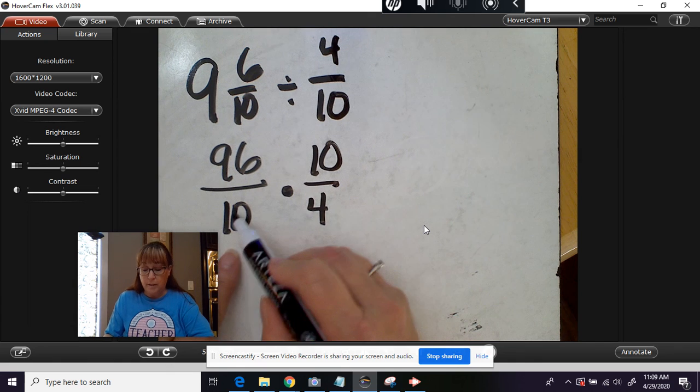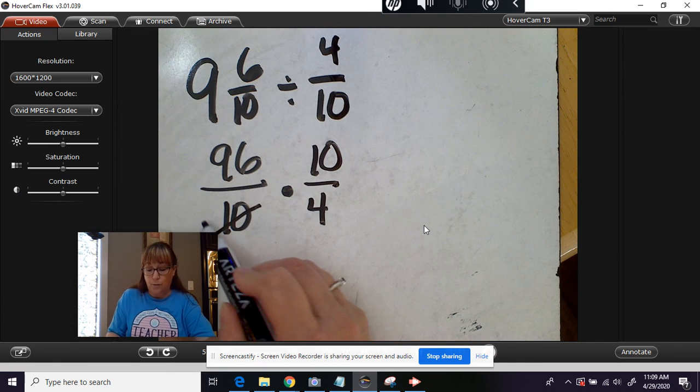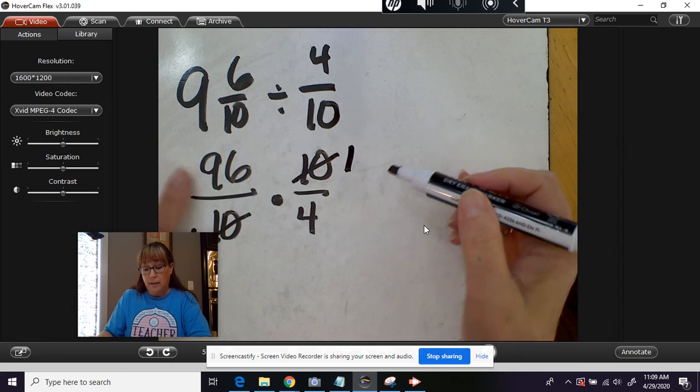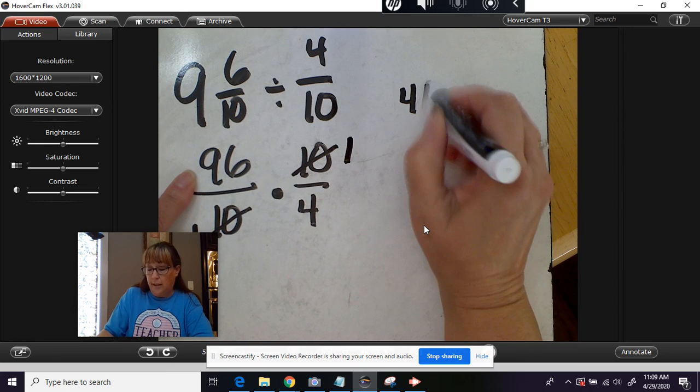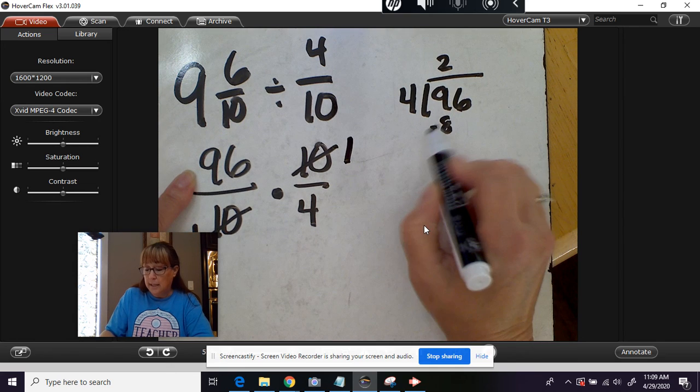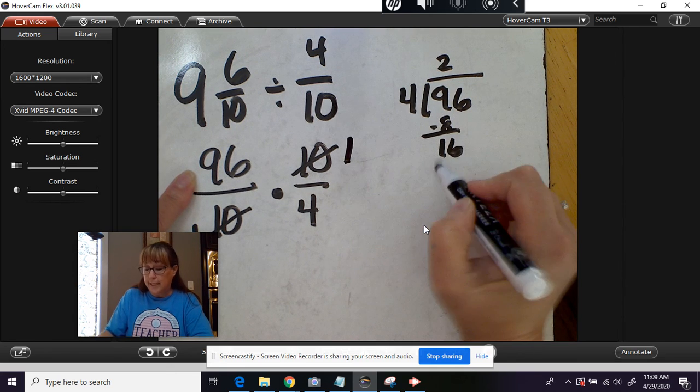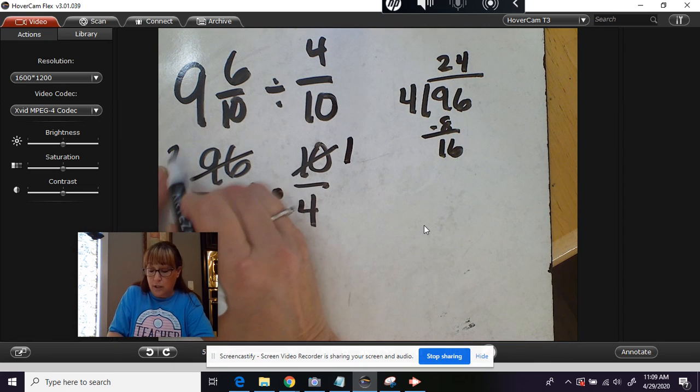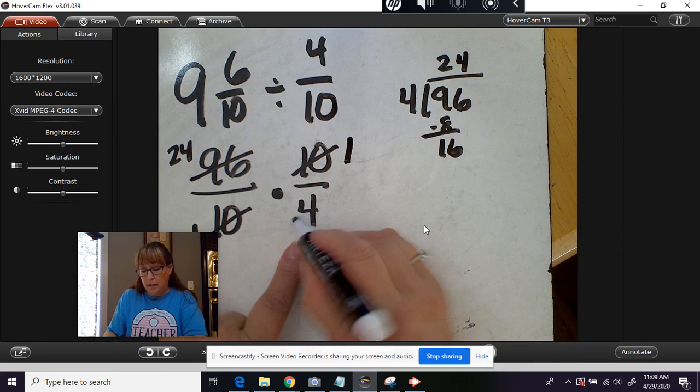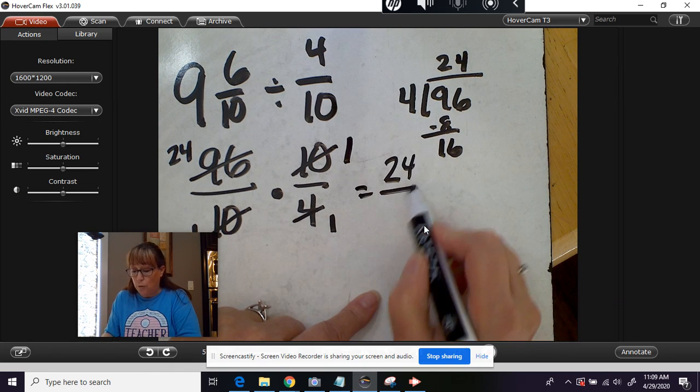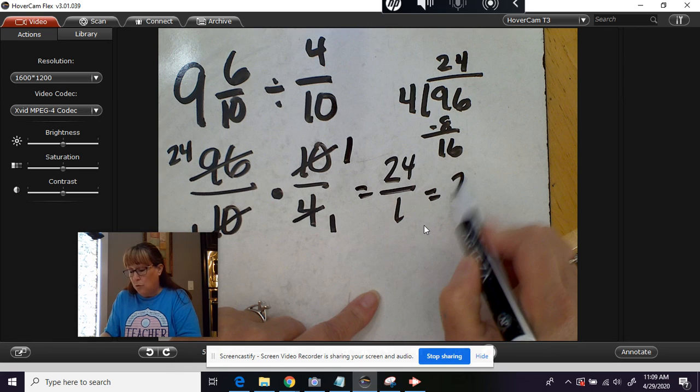Okay, we can cross multiply. Ten divided by ten is one. Ten divided by ten is one. Four into 96, let's check that. Four times two is eight. Four into 16 is four. So that does work. So we can cross this out and make it 24. Make this one. Multiply across. You get 24 over one equals 24.